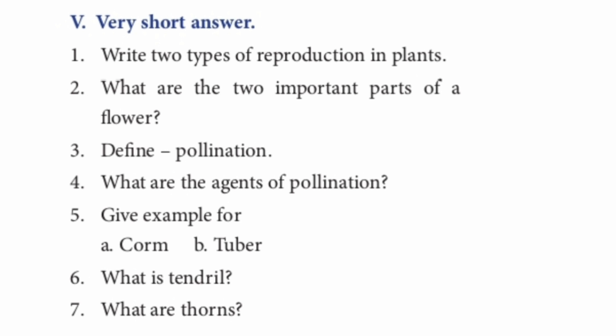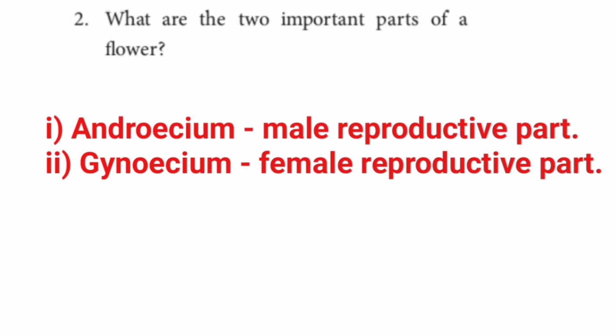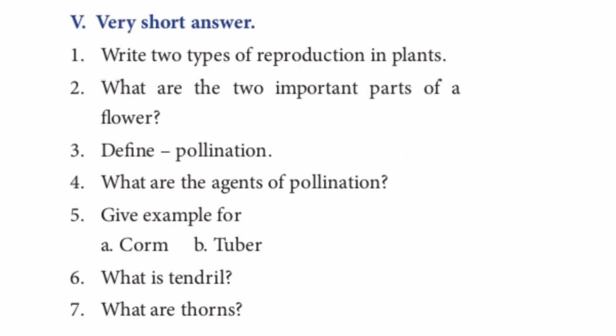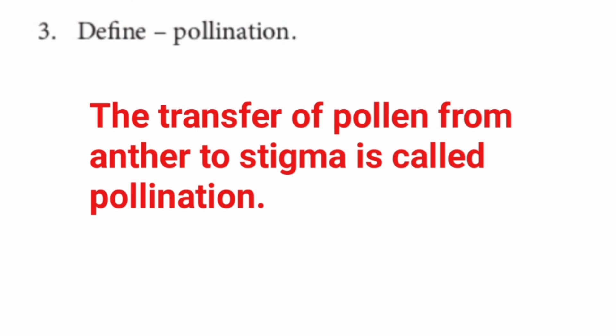Question 2: What are the two important parts of a flower? 1. Androecium — male reproductive part. 2. Gynoecium — female reproductive part. Question 3: Define pollination. The transfer of pollen from anther to stigma is called pollination.